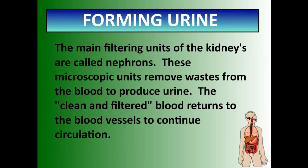The kidneys have an amazing structure called a nephron. You don't have to remember this for our course, but it helps connect more than two systems. Nephrons are microscopic units that remove waste from the blood and produce urine. Urine is the end result of the urea that was mentioned. Urea is very toxic to the blood, so your kidneys pull it out and make urine out of it. The clean, filtered blood then returns to the blood vessels and continues circulating throughout the entire body.